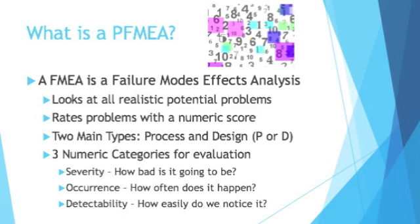Process ones, which is what I'm more familiar with, and design ones, when you're designing a product. There are three main numeric categories for evaluation: Severity — how bad is it going to be? Occurrence — how often does it happen? And detectability — how easily can we catch it or prevent it?